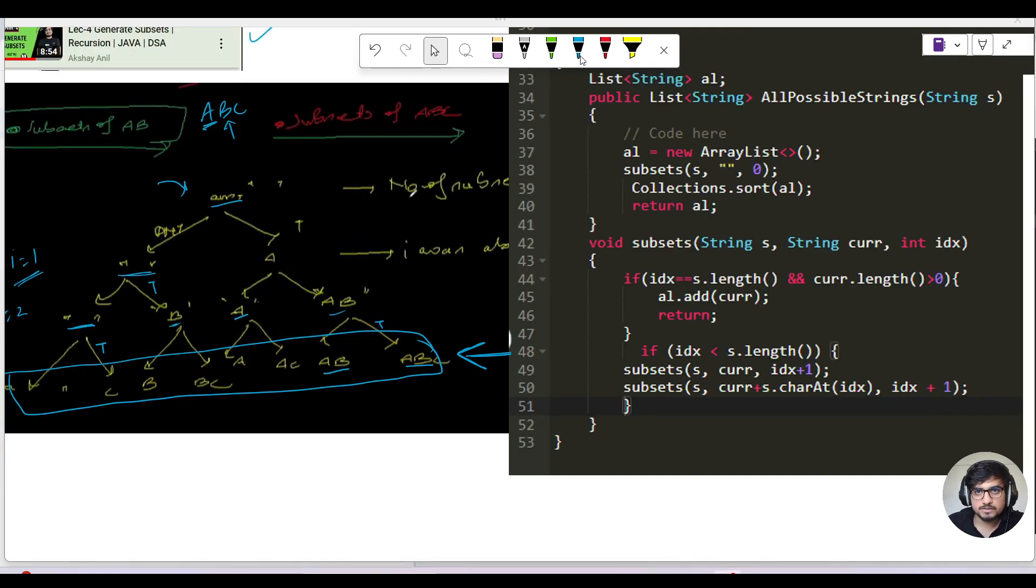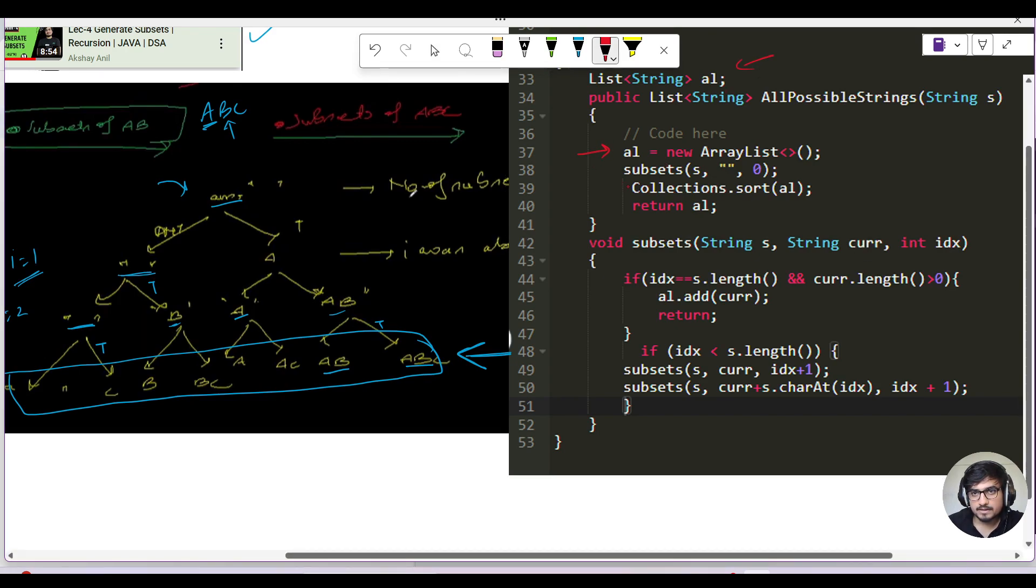That's the code. Let me give a quick code walkthrough. We call the function first. We made an ArrayList because the return type was ArrayList. We initialize it at global scope because we want to use it in the recursion as well. We declare it in the main function and call the subsets function. After calling subsets and generating all the particular subsets, they'll be in our ArrayList.